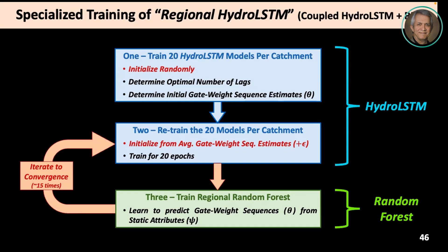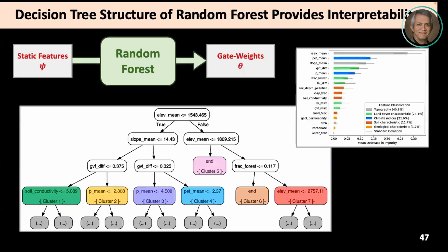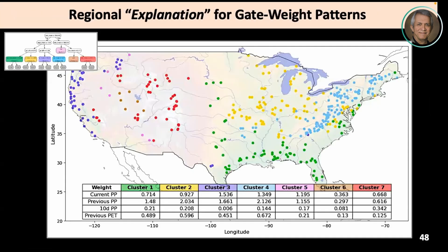He builds a decision tree that provides interpretability. You feed in static features, predict gate weights, and look at the decision tree to see which static feature gives the first level of separation, the most important one, what's at the second level, and so on. The result is you figure out the rules for catchment classification by examining the random forest. Now you have leaf nodes — in this case, five or six — and you map those onto a regional map. The result is much less noisy than the original map, clearly showing meaningful geographic clusters.